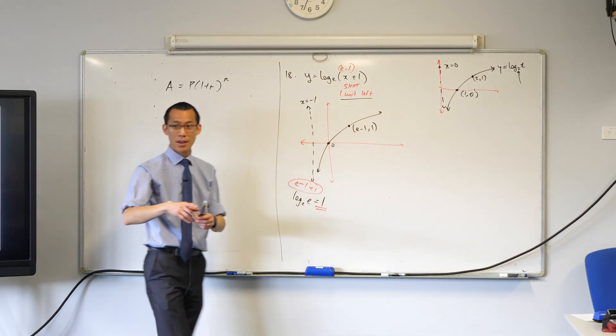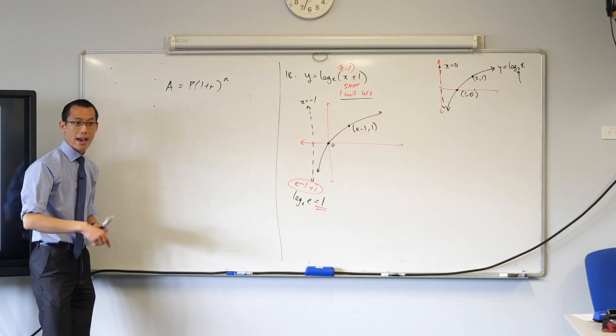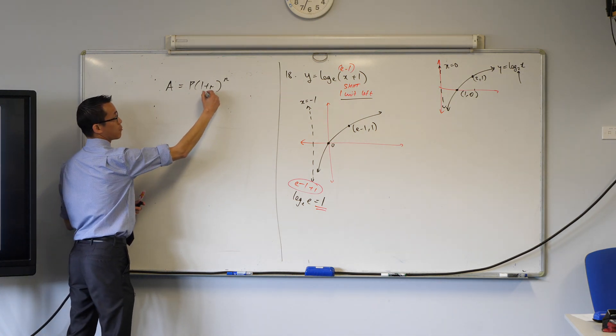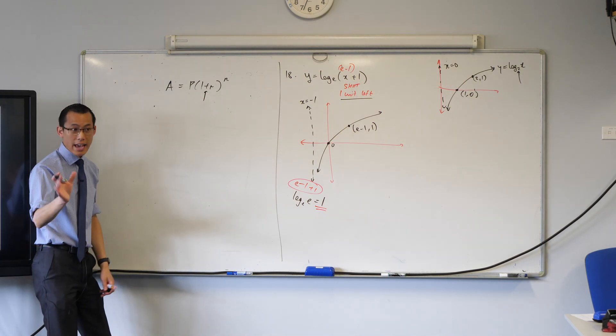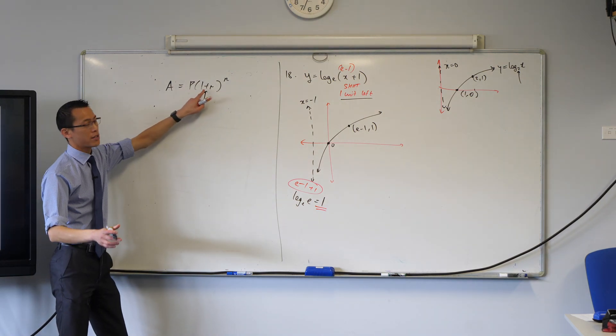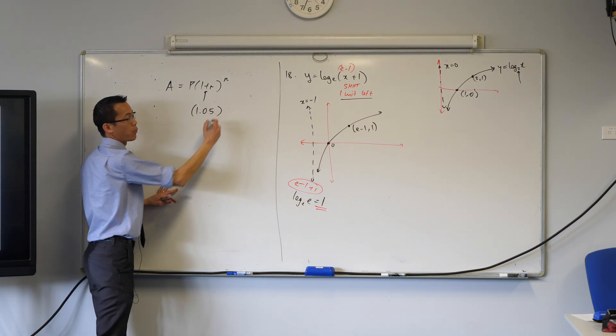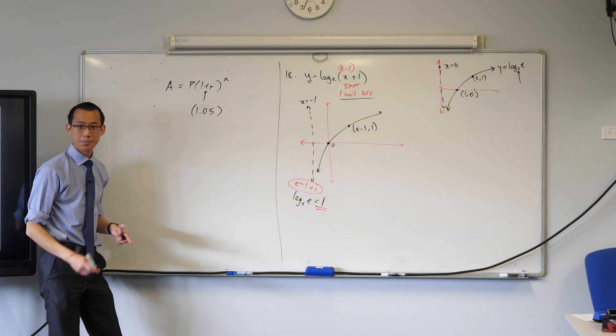So let's start to unpack this. So the 1.05 is correct. Where does it come from? And the answer is it comes from this part here. 5% interest. That's a 1 plus a 0.05. So I agree with Sireen that that'll be 1.05.